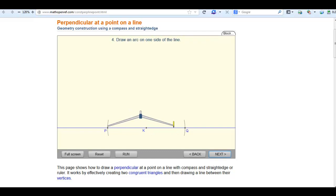Then you stab P and make a width that's larger than KP. Then we make an arc on the top and then without changing the width, we do the same from point Q.